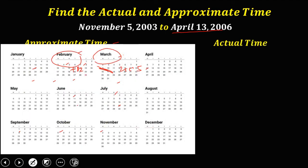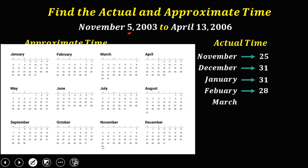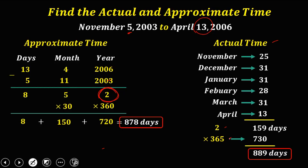For the actual time, we use the calendar. November started on the 5th, so 30 minus 5 equals 25 days. December has 31, January has 31, February always equals 28 days, March has 31, and April counts only until the 13th. Adding those gives 159 days. Since there are two full years, 2 times 365 equals 730 days. So 159 plus 730 equals 889 days for the actual time.